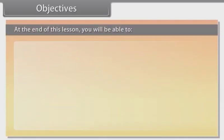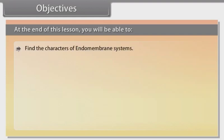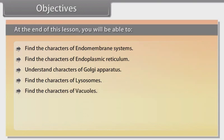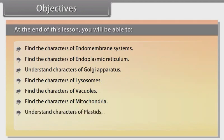At the end of this lesson you will be able to find the characters of endomembrane systems, find the characters of endoplasmic reticulum, understand characters of Golgi apparatus, find the characters of lysosomes, find the characters of vacuoles, find the characters of mitochondria, understand characters of plastids, and find the characters of ribosomes.